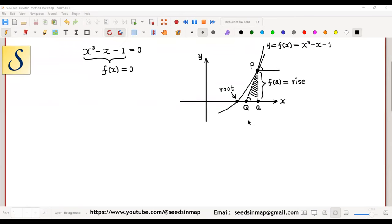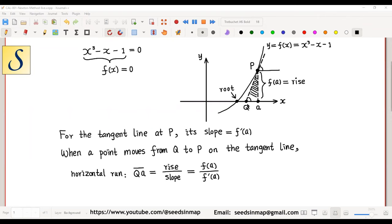Now, if a value a is given as an estimate of the root, then for the tangent line at P, this line, its slope equals f'(a). When a point moves from Q to P on the tangent line, its horizontal row Qa equals rise over slope, which equals f(a) over f'(a).